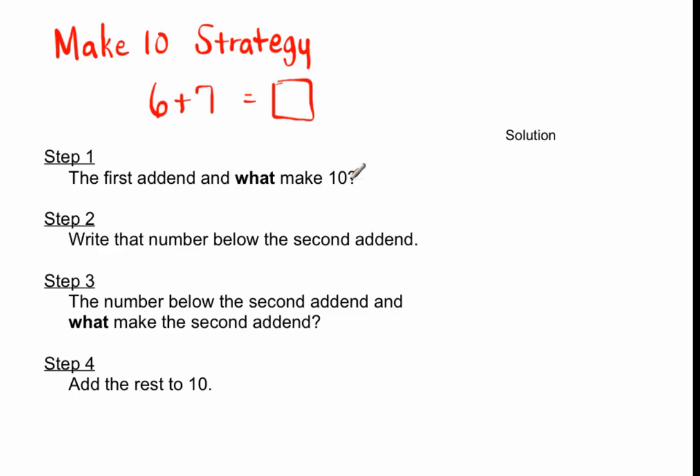What you do is write that number below the second addend. I'm going to break the second addend up and write a 4 here. This number is always the number that makes 10 when added with the first addend.